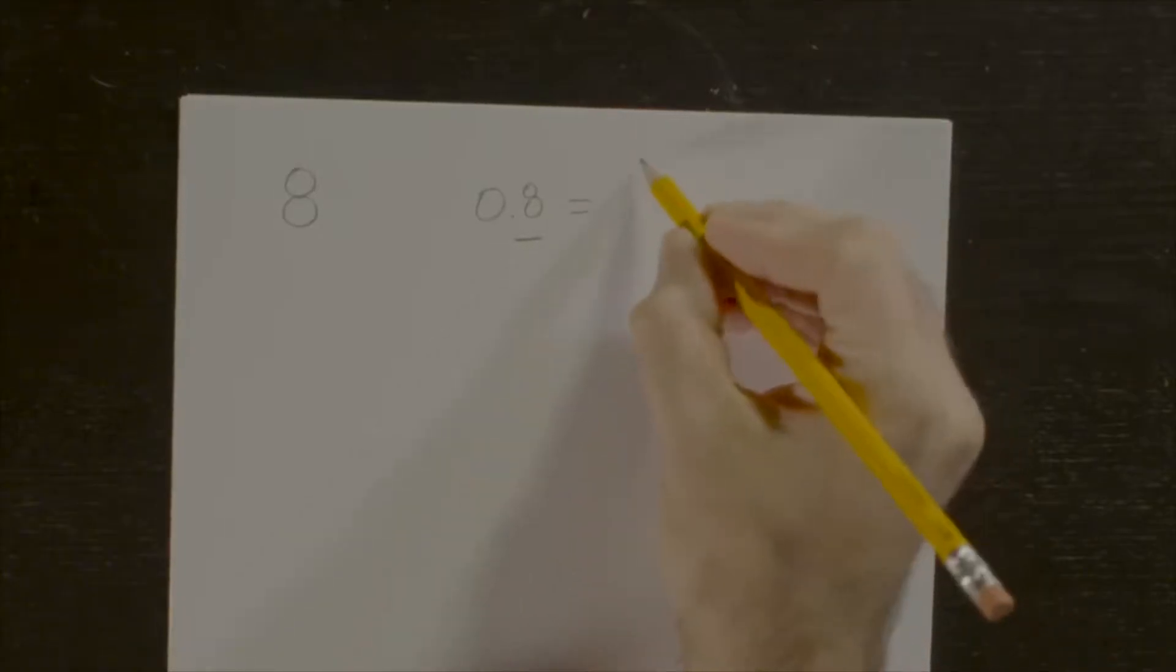It is rational, which means it can be expressed as a ratio between two integers. In this case, 0.8 is equal to 8 over 10.